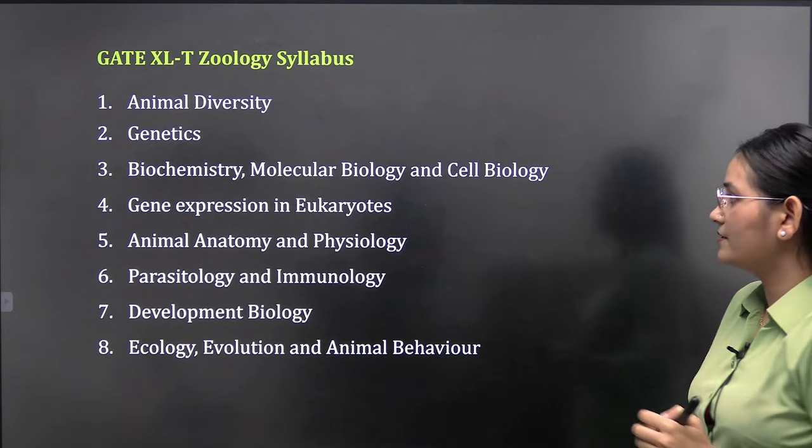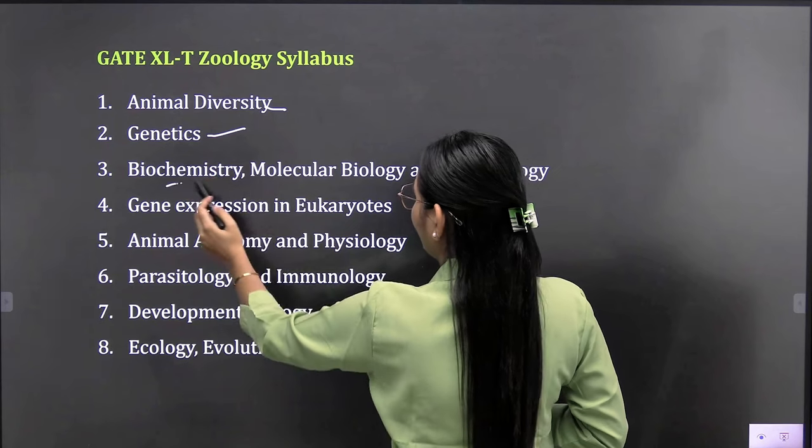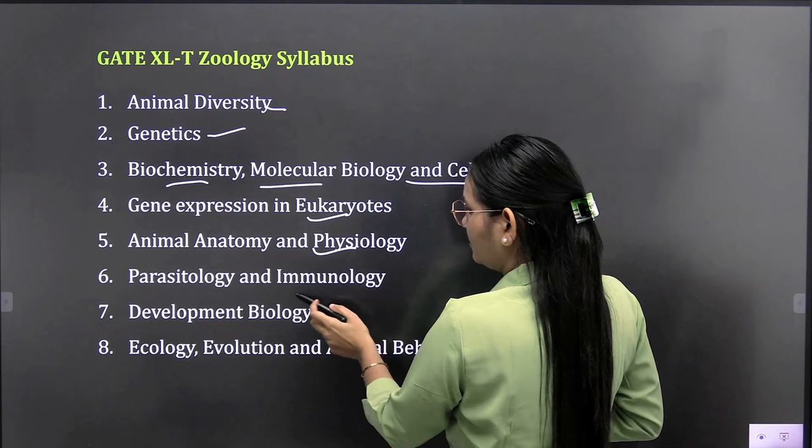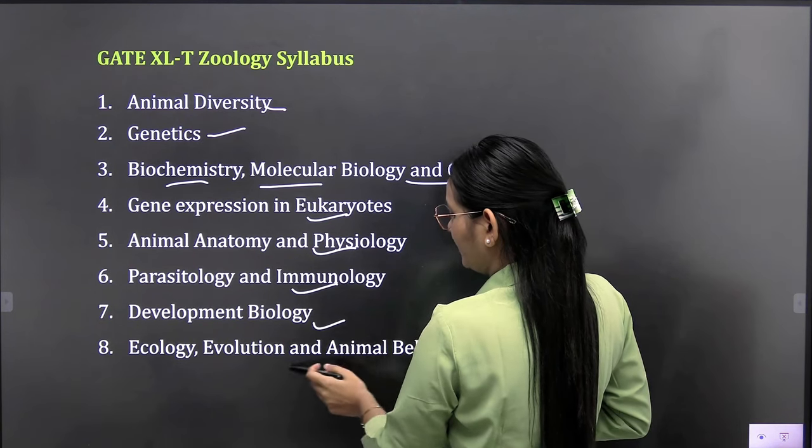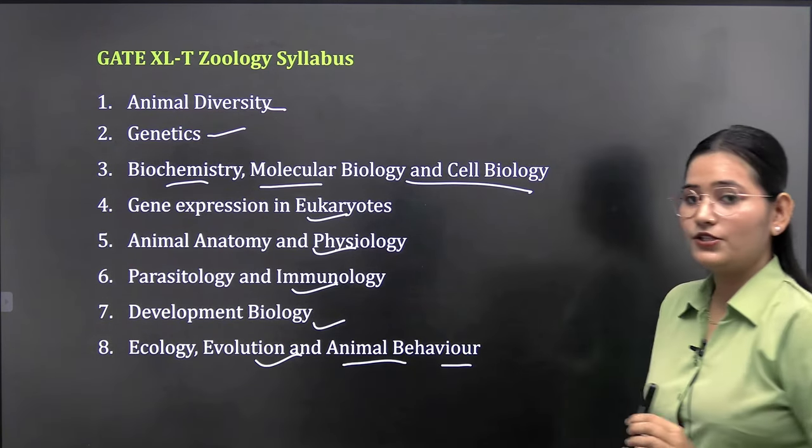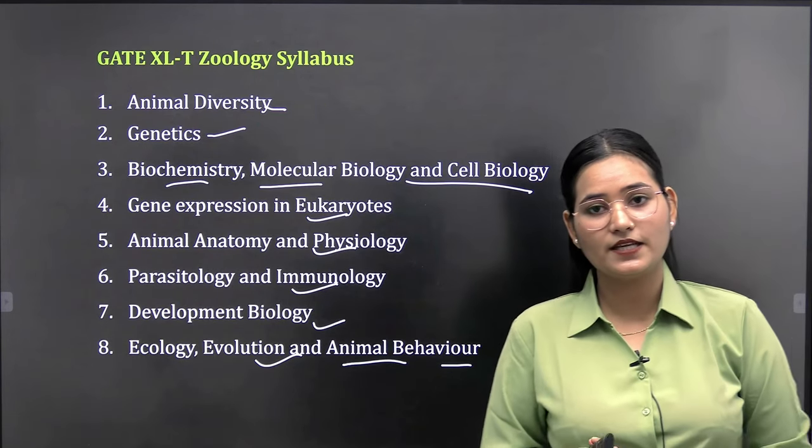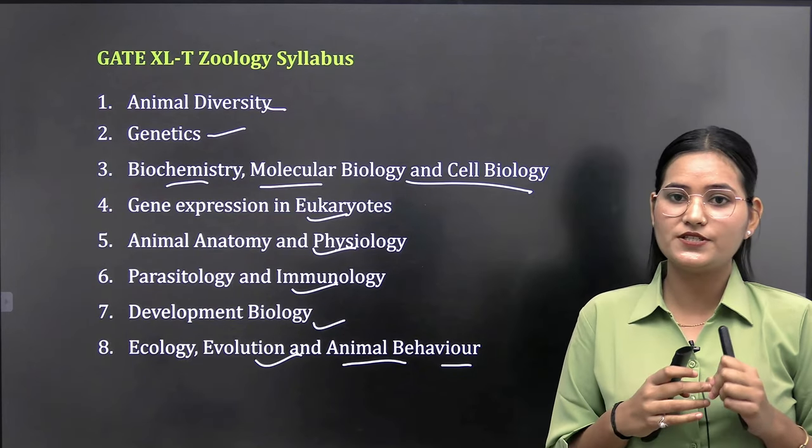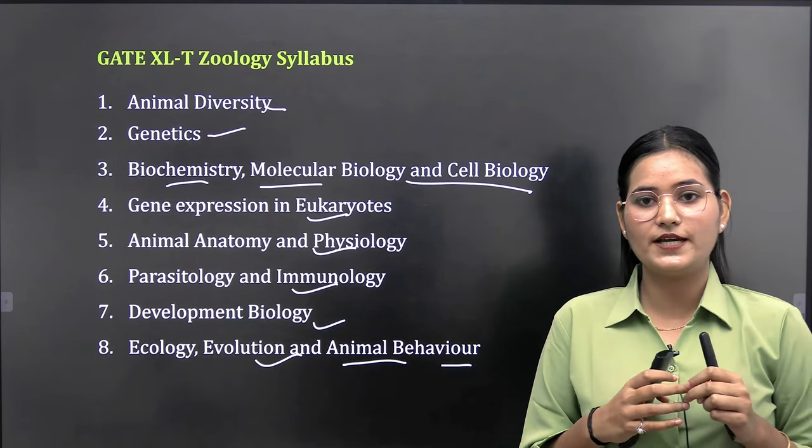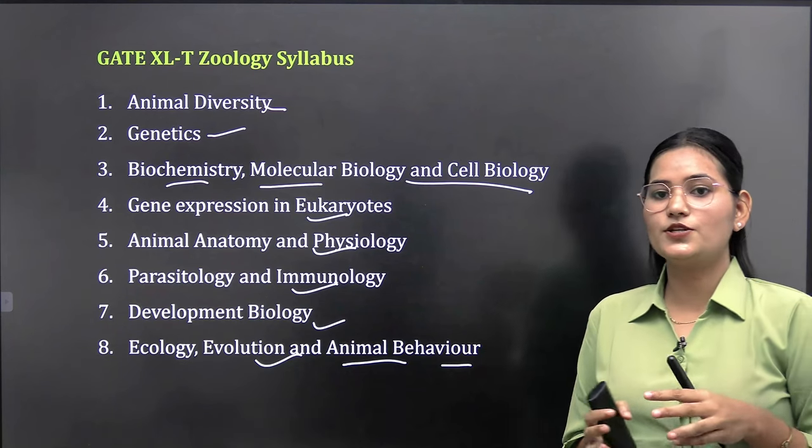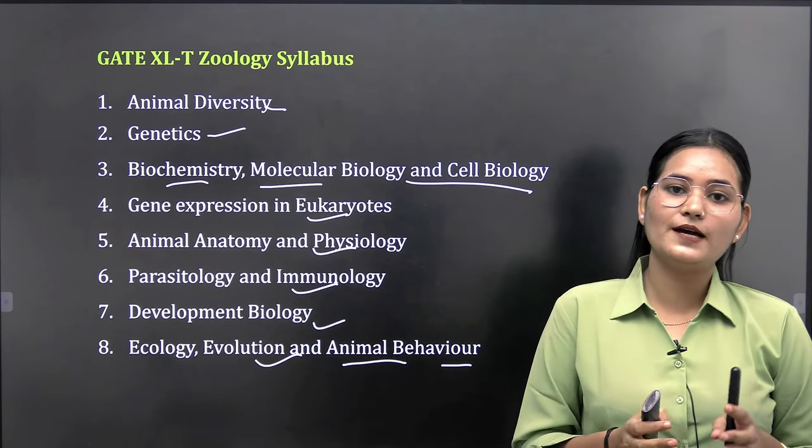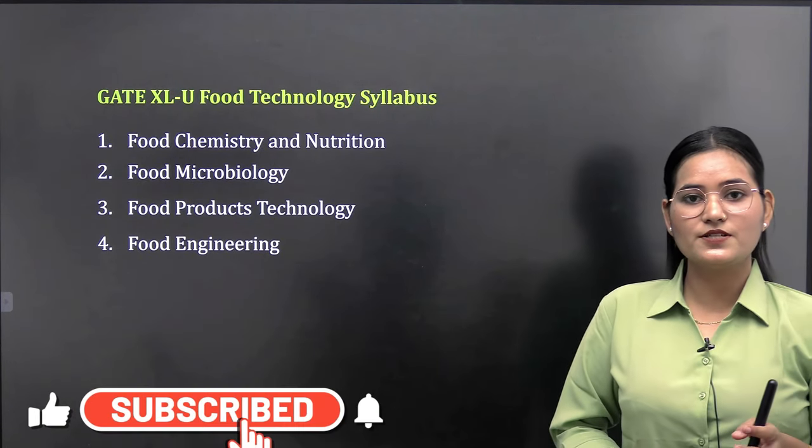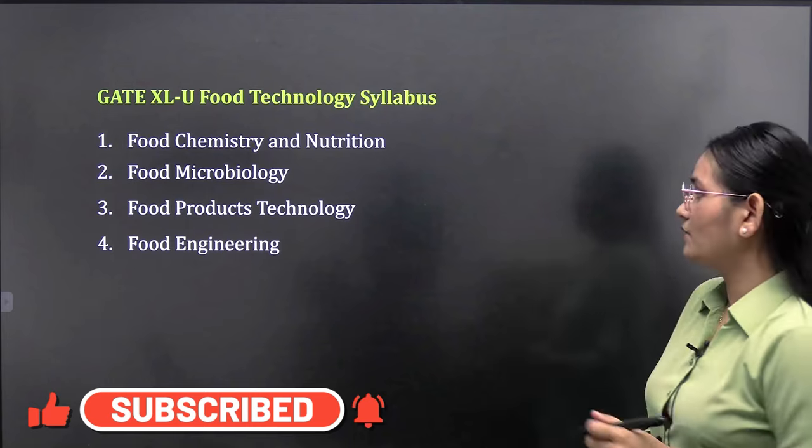Coming to the syllabus of zoology. You will study animal diversity, genetics, biochemistry, molecular biology and cell biology, gene expression, animal anatomy, parasitology, developmental biology, ecology, evolution, and animal behavior. Total eight sections. Eighty percent of zoology syllabus is similar to biochemistry and microbiology. If you are preparing biochemistry and microbiology, then automatically eighty percent of zoology syllabus will be prepared.